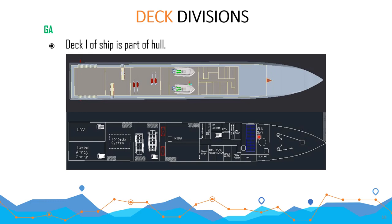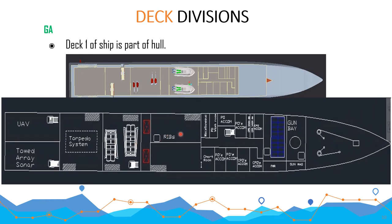On deck 1, you can see different features: these are the ribs and these are boats present here. This is the missile system and torpedo system. This is the anchor chain system, and these are the winches present in the hull. These are the accommodations present along deck 1. I have obtained this general arrangement plan for deck 1 from historical ship data.